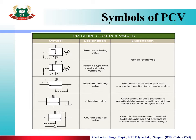Symbols of Pressure Control Valves: The pressure relieving valve — in normal position, port 1 is connected to the system inlet and the other side connects to the return/spring line. Normally it is open. When pilot pressure increases, it shifts the valve to closed position, compressing the spring. When pressure returns to normal, the valve returns to the normally open position.